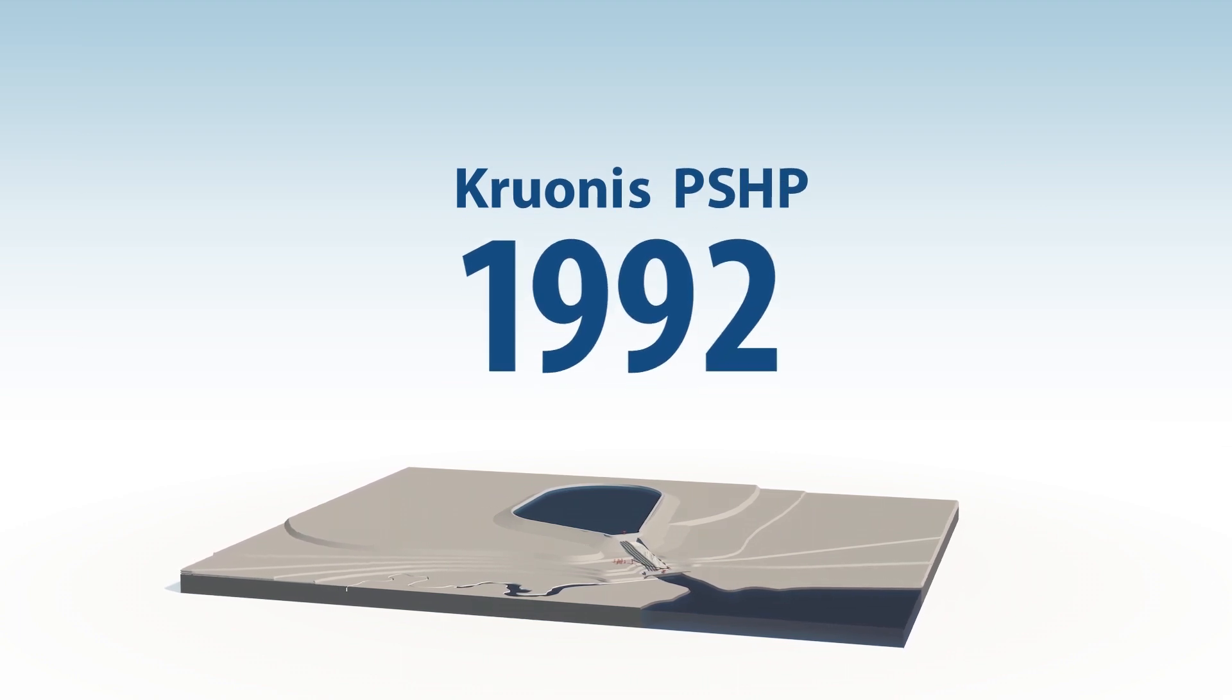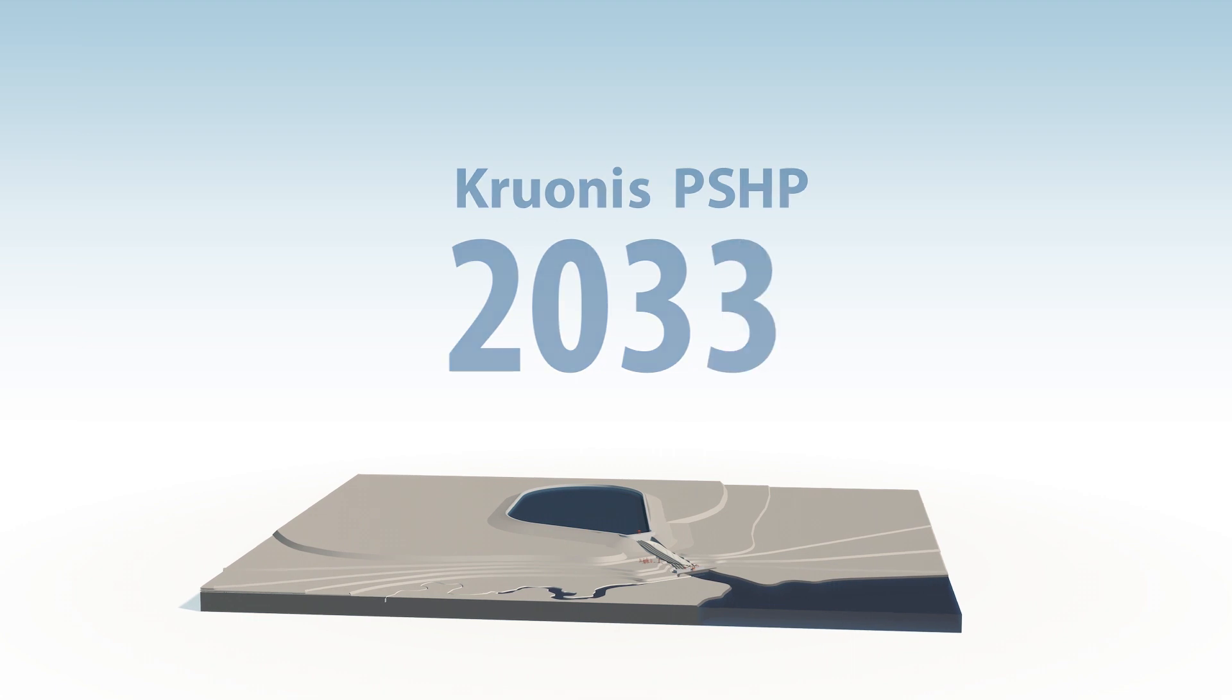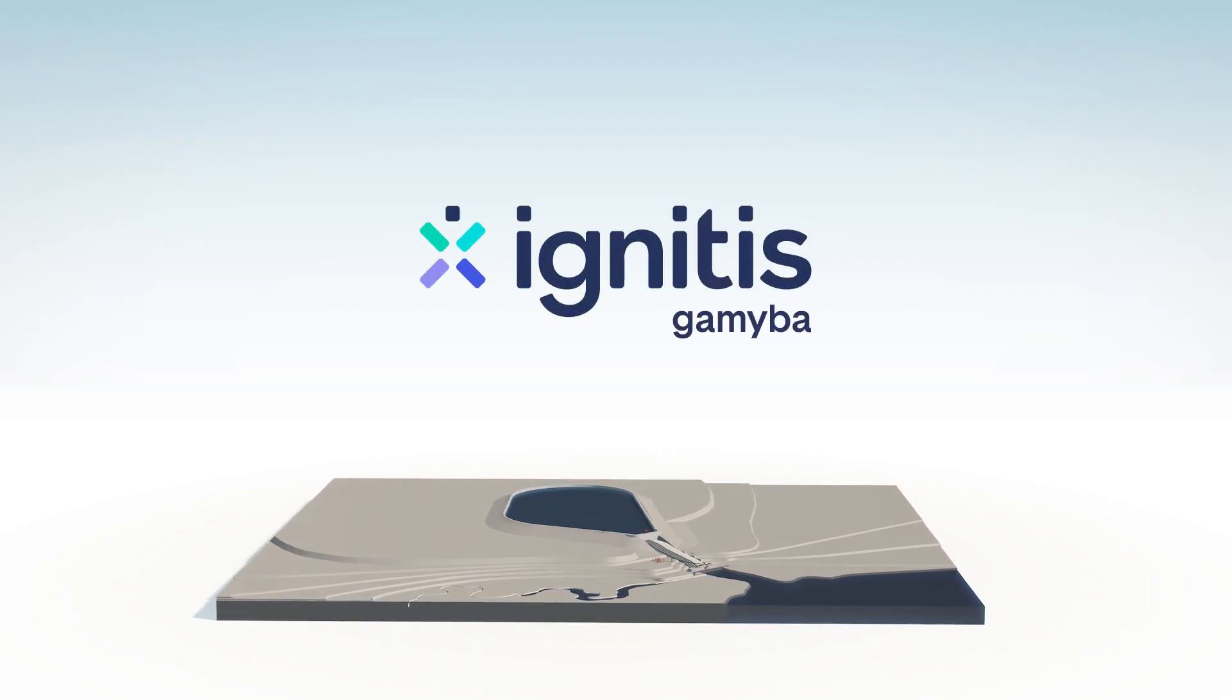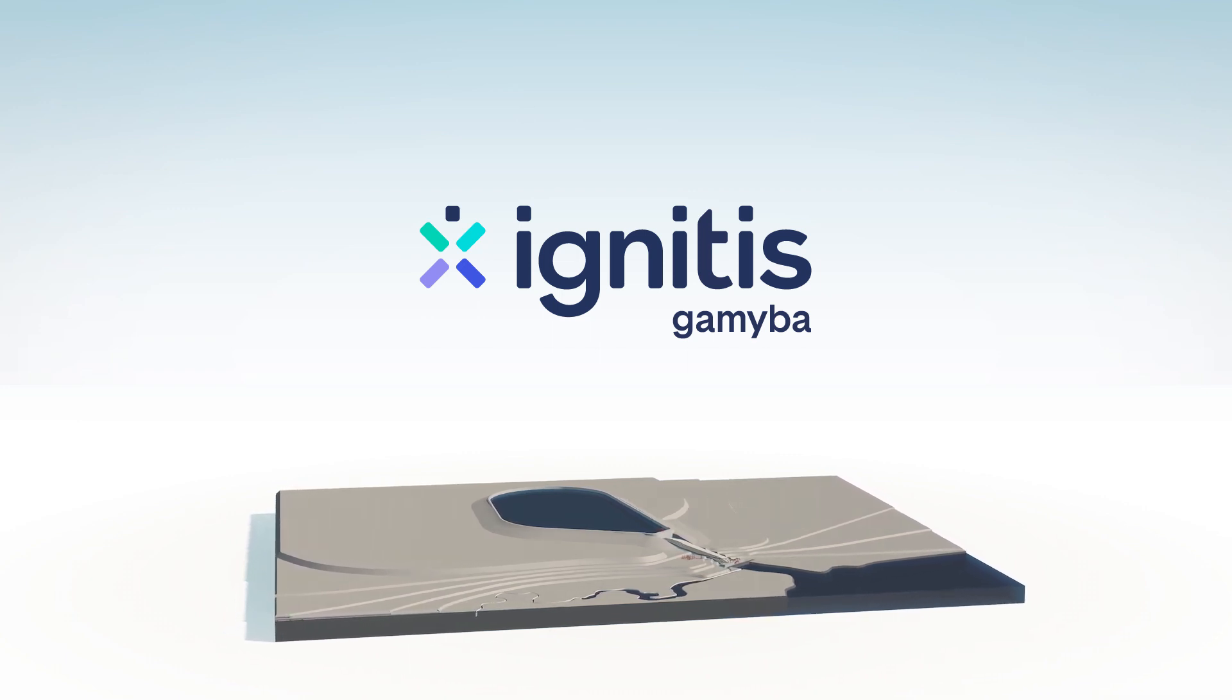The Croinus Pumped Storage Hydroelectric Plant has been successfully serving state and public interests for more than 20 years. Run safely by experienced and qualified specialists, the plant will no doubt continue to be one of the most important links in the Lithuanian energy system for decades to come.